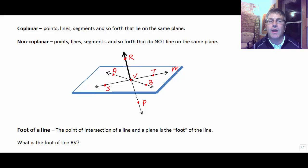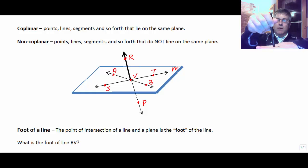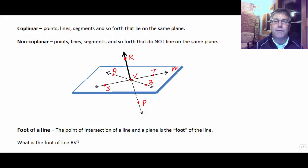Another important vocabulary term is the foot of a line. The foot of a line is the point of intersection of a line and a plane—the point where the line hits the plane. That is considered the foot of the line. Come to class tomorrow and tell me what the foot of line RV is.